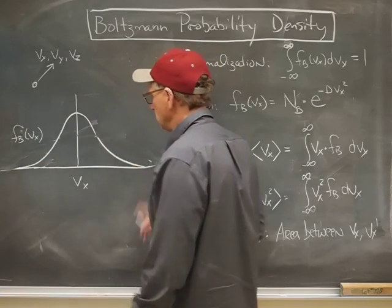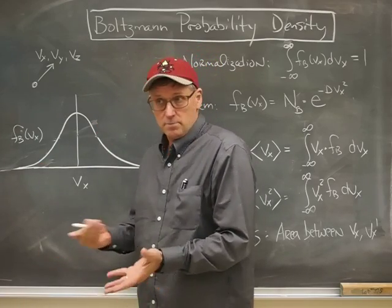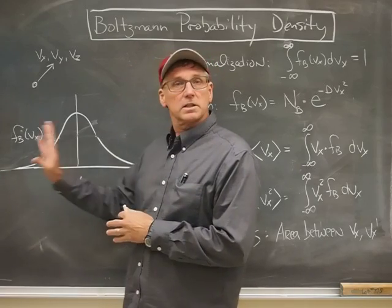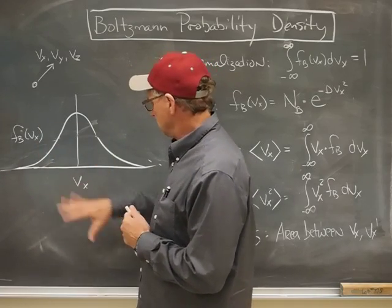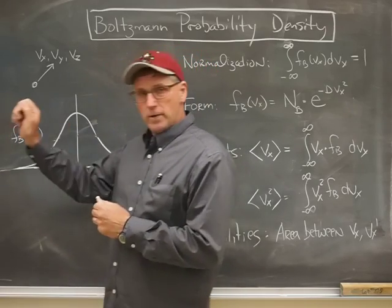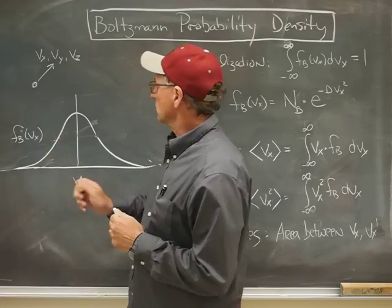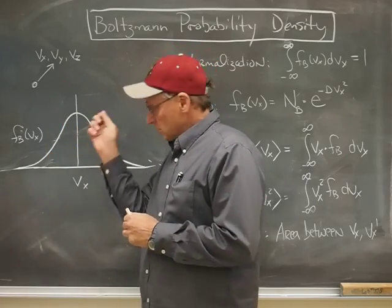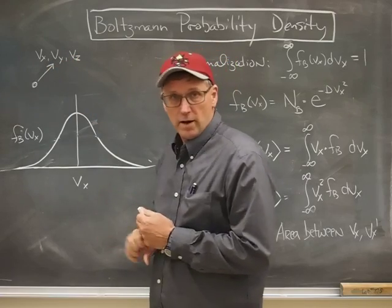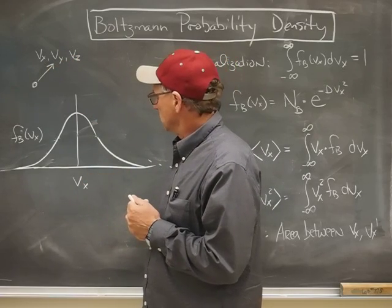Well, it's a curve that tells you the likelihood of finding a gas particle going at a certain velocity component. What's a velocity component? It could be going in the x-direction, or in the z-direction, or in the y-direction. I just imagine a particle going with some combination of those velocity components.